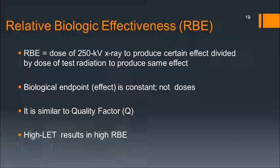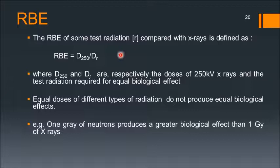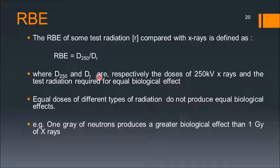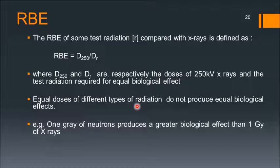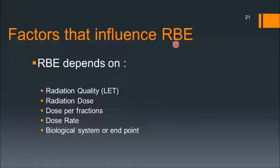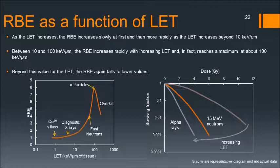High LET radiation results in high RBE. RBE of a test radiation compared with x-rays is given by D250 divided by DR, where D250 is the 250 kV x-ray dose to produce a particular biological effect, and DR is the dose of the test radiation to produce the same effect. This is because equal doses of different types of radiation do not produce equal biological effects — for example, 1 gray of neutrons produces a greater biological effect than 1 gray of x-rays. RBE depends on radiation quality (LET), radiation dose, fractionation and dose per fraction, dose rate, and the biological system or endpoint.